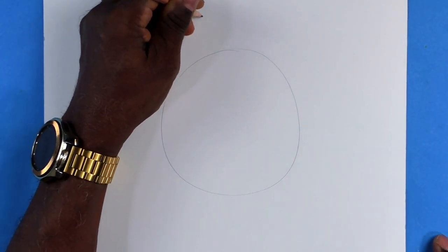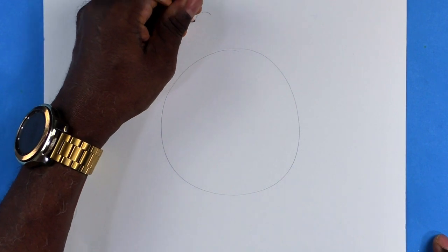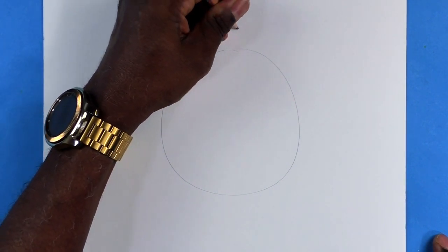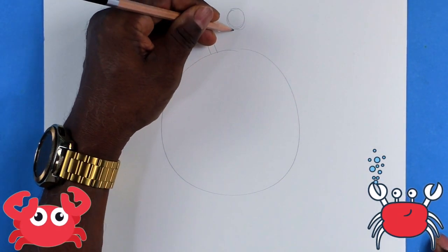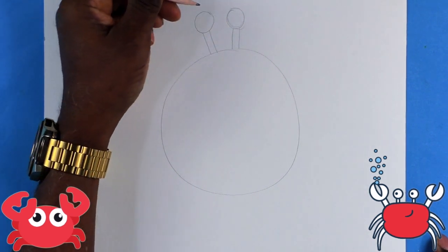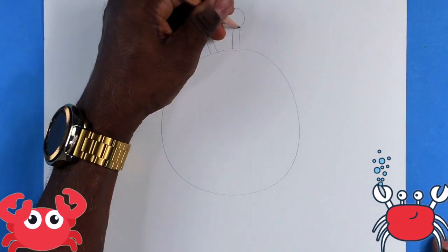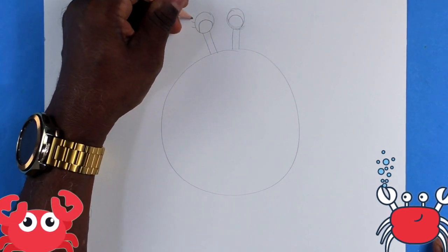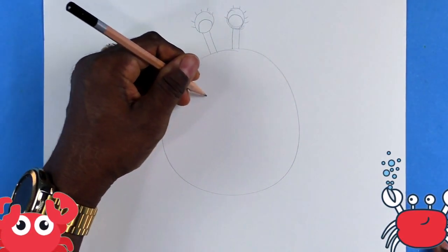Now I'm going to make two smaller circles for his eyes and then I am going to attach the circles by drawing two lines. And let's make two small circles inside for his pupils and some eyelashes to keep the sand out of his eyes.